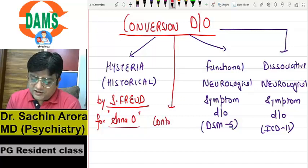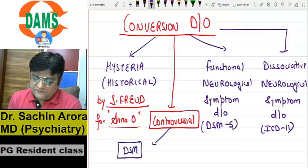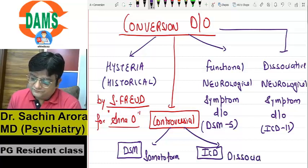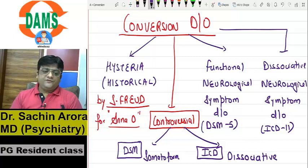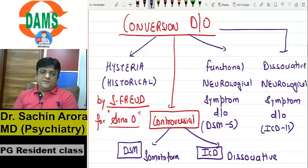The classification has been controversial. You know all the DSM groups up to DSM-5 included conversion disorder under somatoforms, and all the ICD groups included it under dissociative. We believed this dispute would be resolved when ICD-11 and DSM-5 came out, but it is still continued.